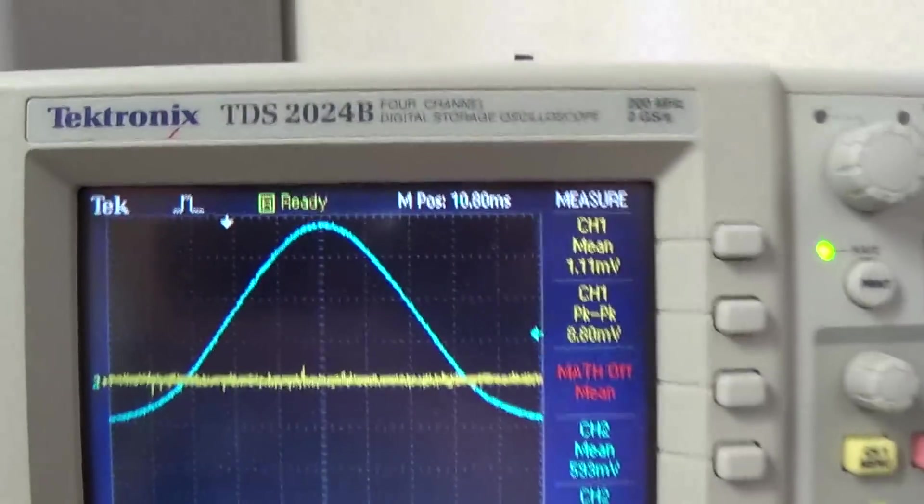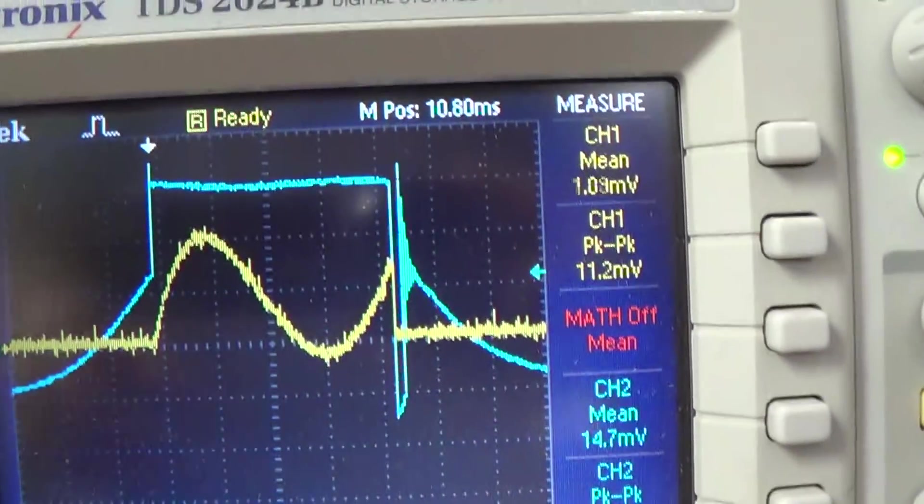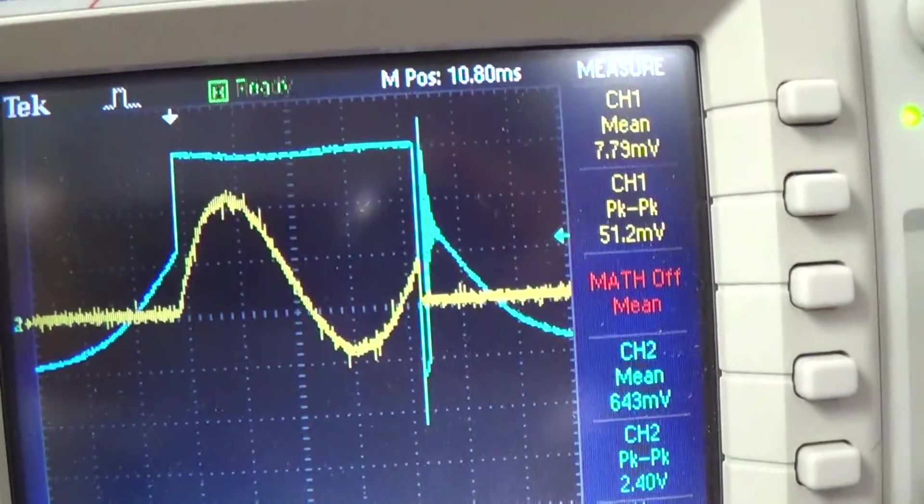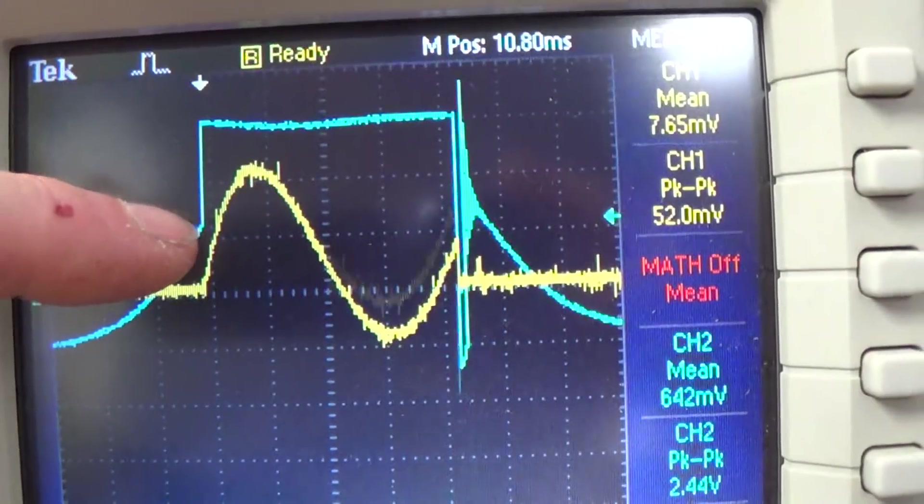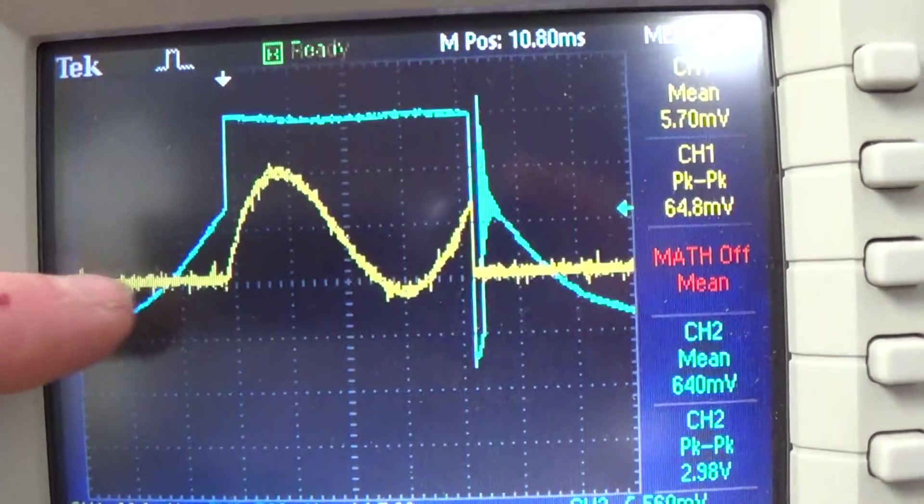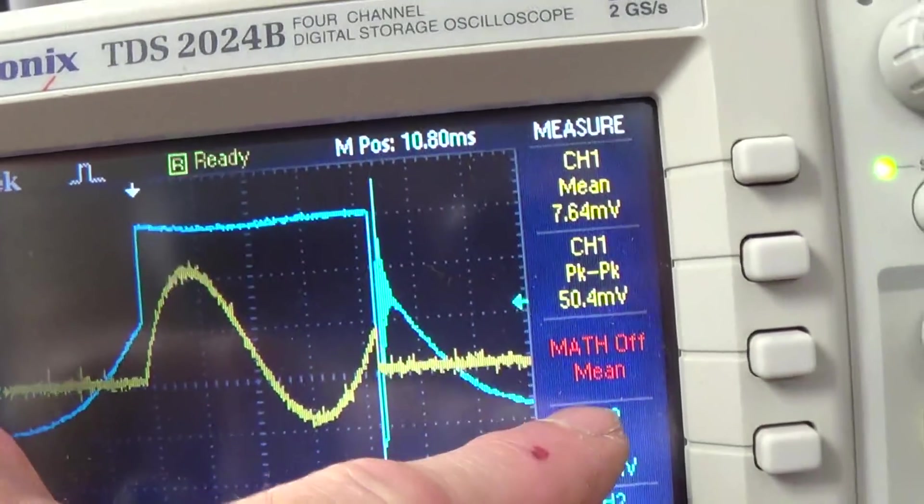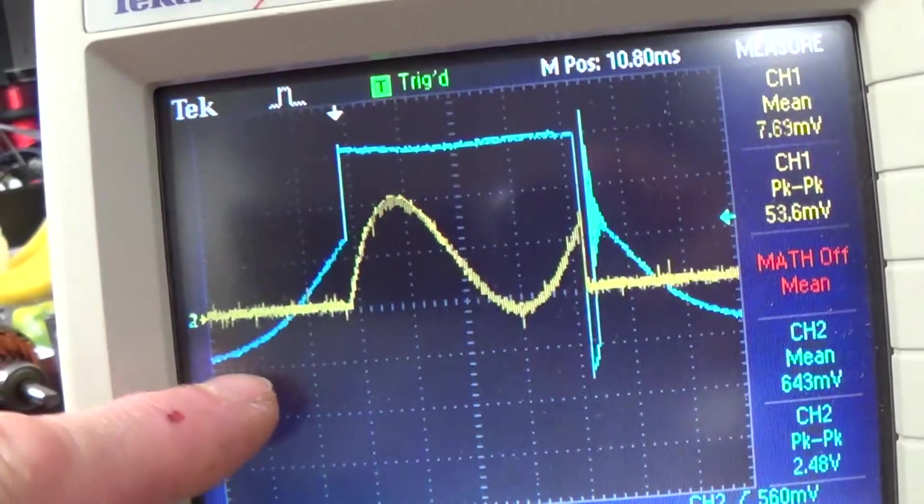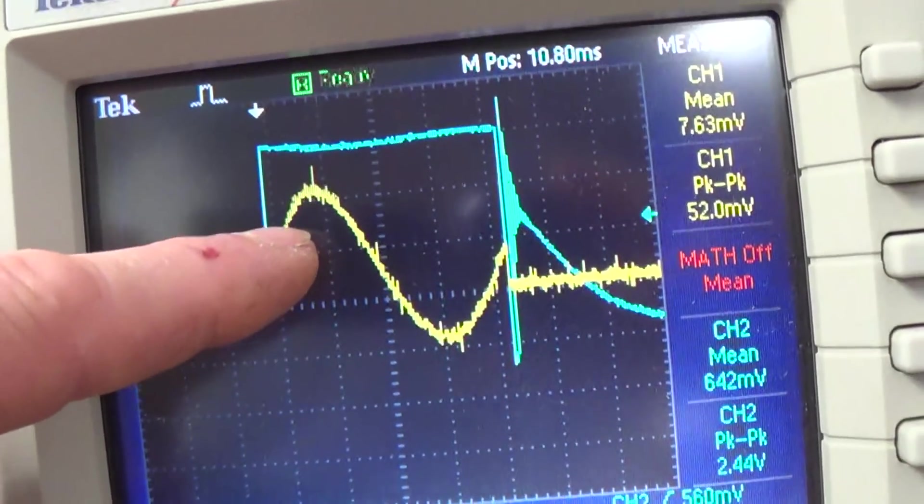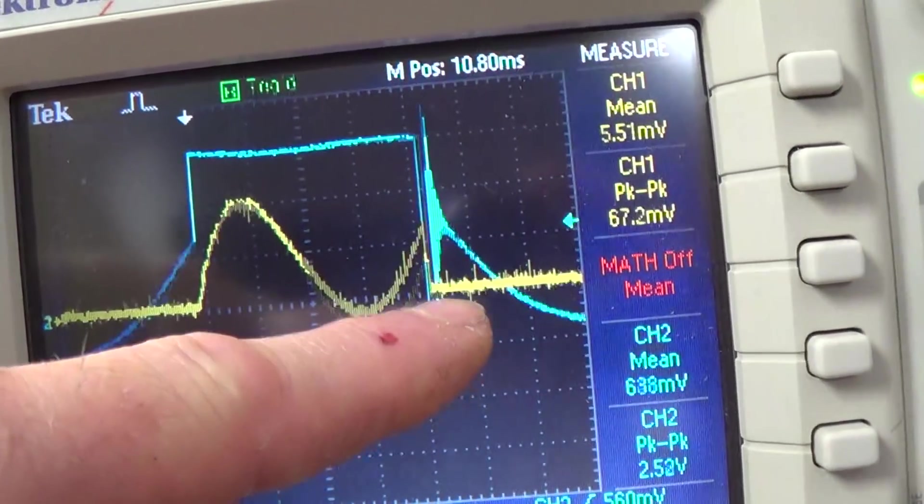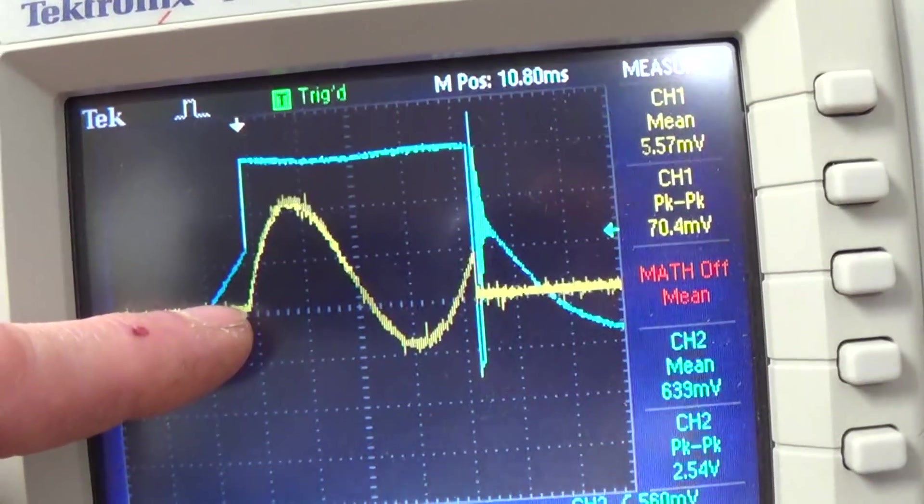So this is the motor action, this is the action of putting current in this inductor. Now the blue trace here is the voltage across our coil here, and then the yellow trace is our current sensing resistor.